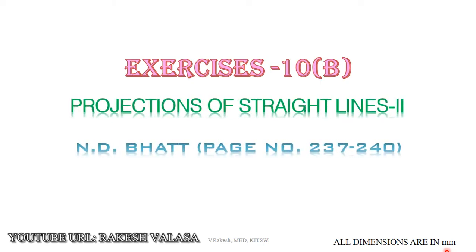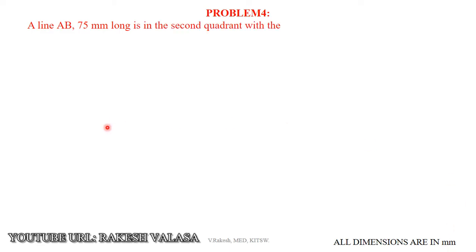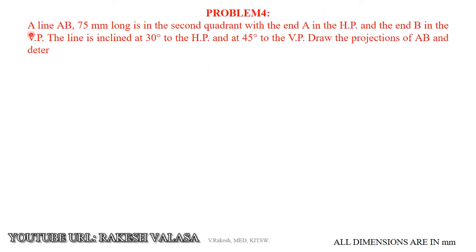Coming to problem number 4: a line AB, 75 mm long, is in the second coordinate with the end A in the HP and the end B in the VP. The line is inclined at 30 degrees to the HP and at 45 degrees to the VP. Draw the projections of AB and determine its traces.